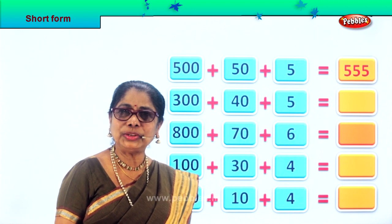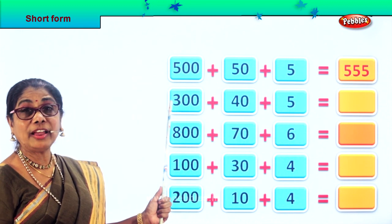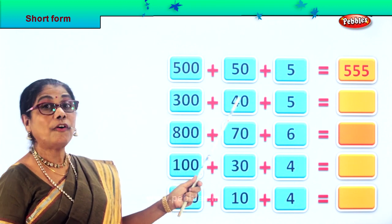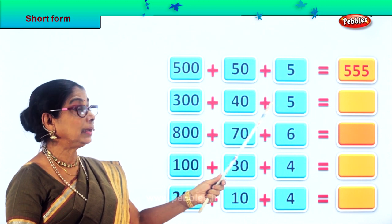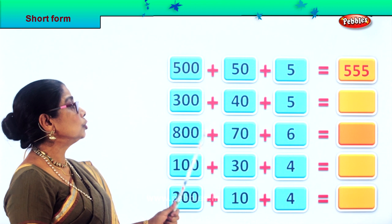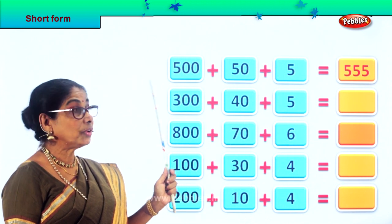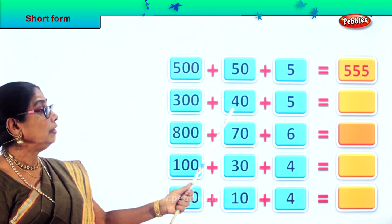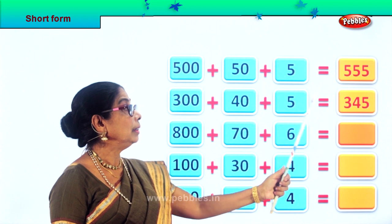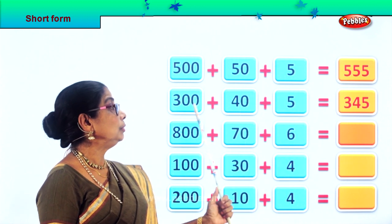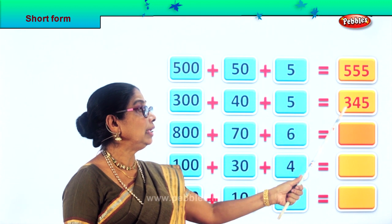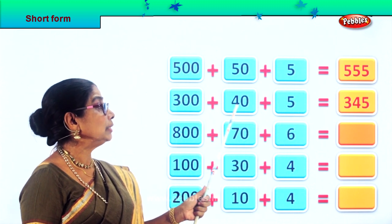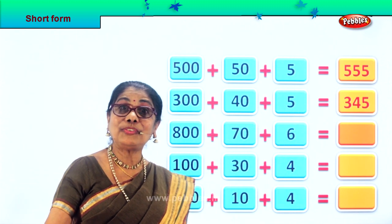Isn't it interesting? Now look at this. We have here 300, that's the hundreds place, plus 40 in the tens place, plus 5 in the ones place. So 300 plus 40 plus 5 is equal to 345.